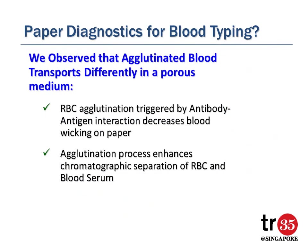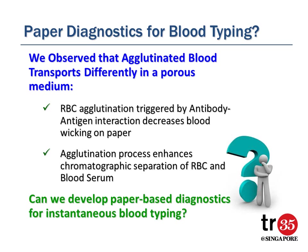In Monash University, we observed that agglutinated blood transports differently in a porous medium. We started thinking: can we develop paper-based diagnostics for instantaneous blood typing? The reasons we selected paper as the medium are that for successful commercialization, bioassays require to be low-cost, available, biocompatible, easy to functionalize, and easy to sterilize. And paper fulfills all the requirements.